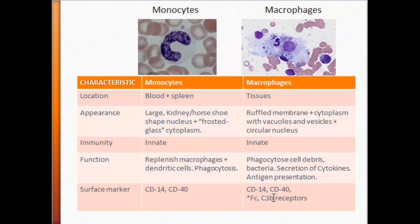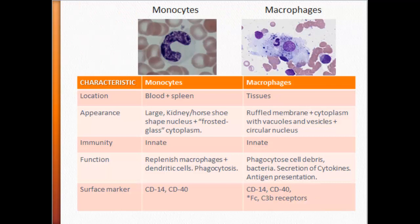The macrophage also has a C3b receptor. Remember, C3b is one of your complement proteins and it causes opsonization. So when you have bacteria, C3b binds to that bacteria and opsonizes it. Macrophages come to the area, bind the C3b to their C3b receptor, which in turn heightens or enhances phagocytosis.